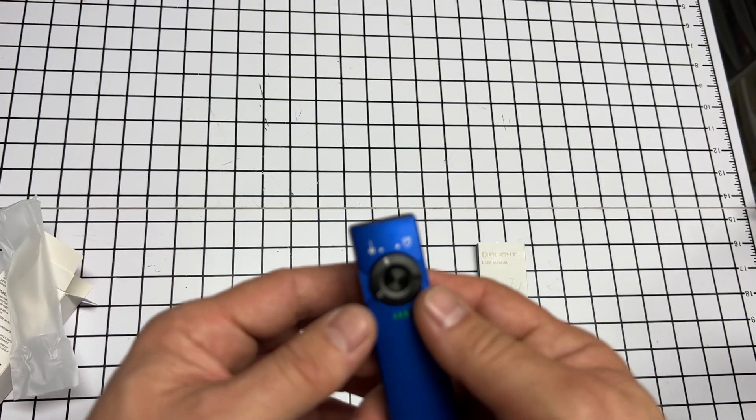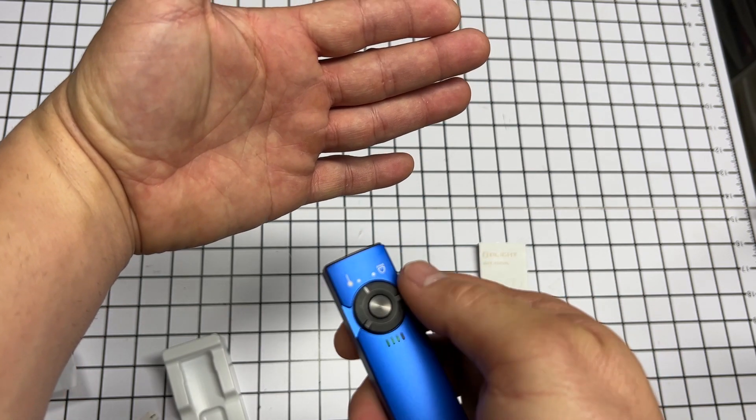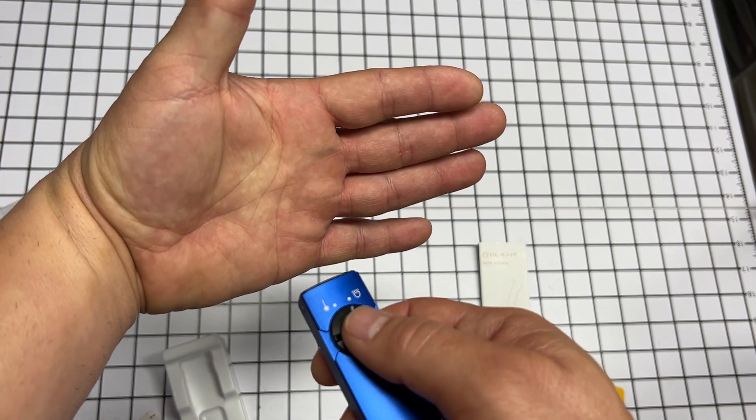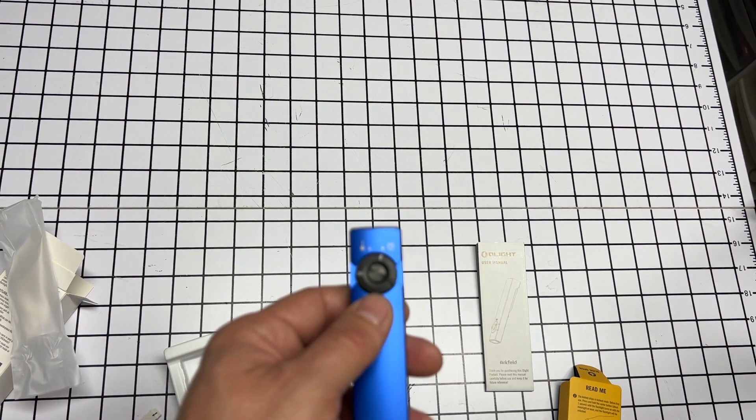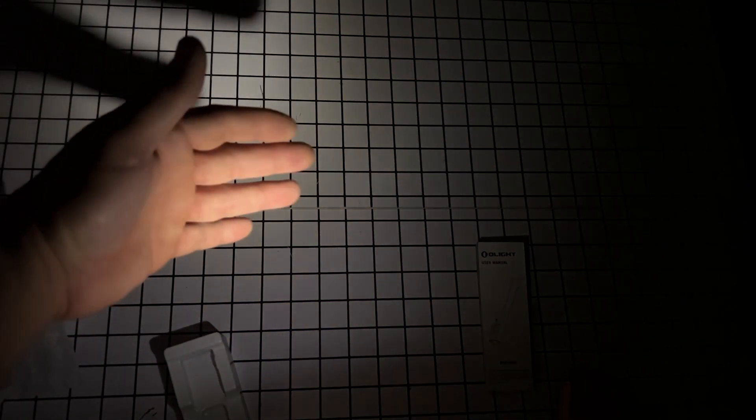Press it again and now it works. Okay, so laser on and off. Switch it to light - there's the light. That's the moonlight, that's very, very low. Let me turn out the light so you can see. So this is the moonlight setting and this will let you last for eight days.